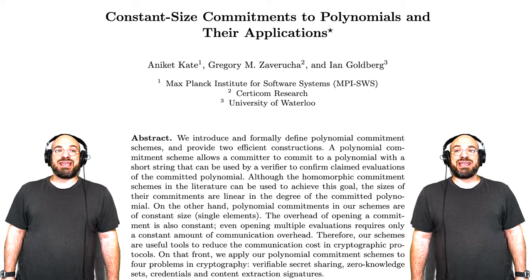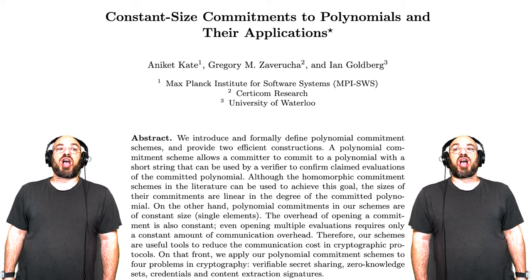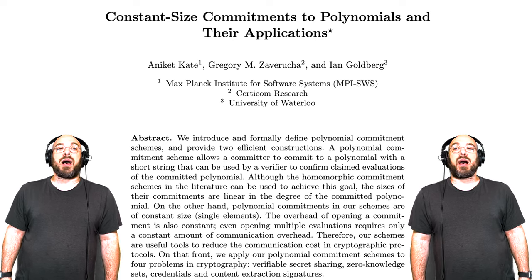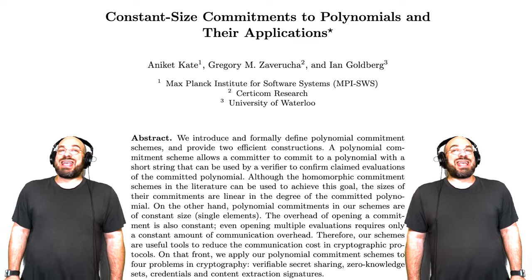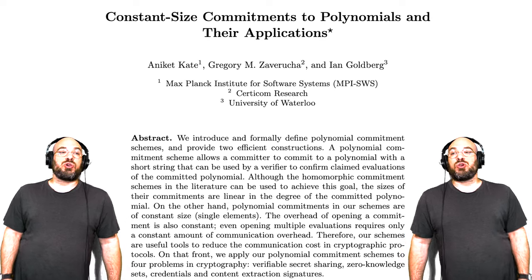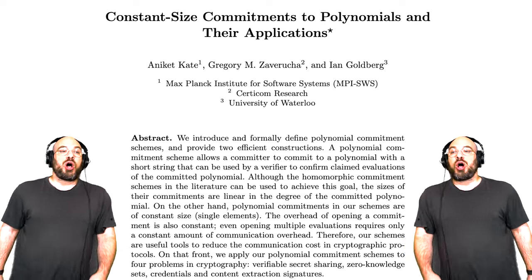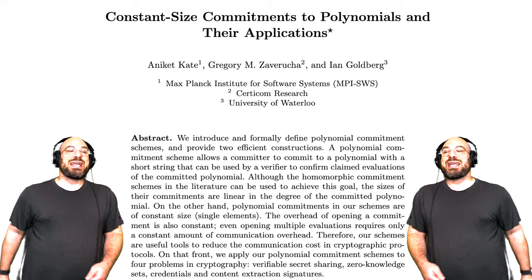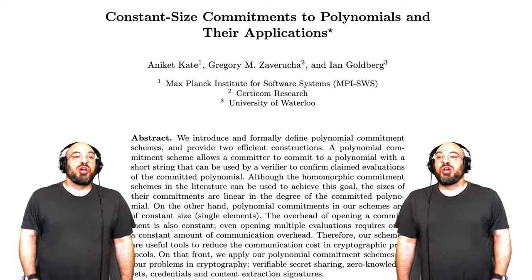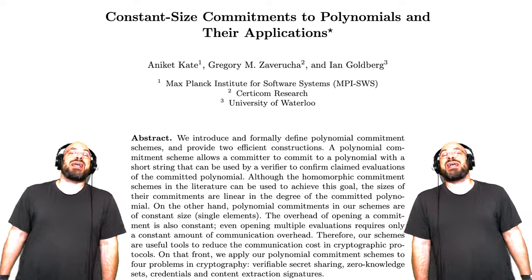We introduce informally defined polynomial commitment schemes and provide two efficient constructions. A polynomial commitment scheme allows a committer to commit to a polynomial with a short string that can be used by a verifier to confirm evaluations of the committed polynomial. Although commitment schemes in the literature can be used to achieve this goal, the sizes of commitments are linear in the degree of the committed polynomial.